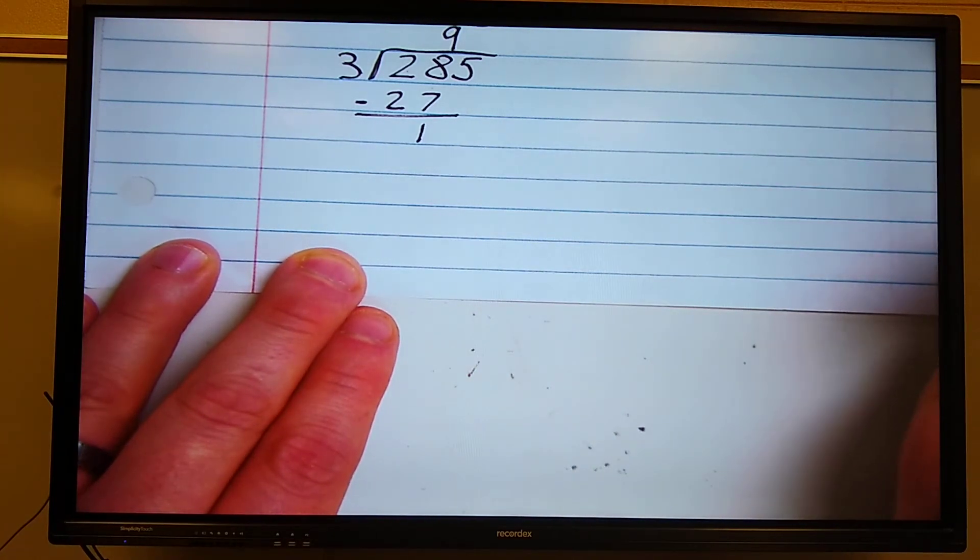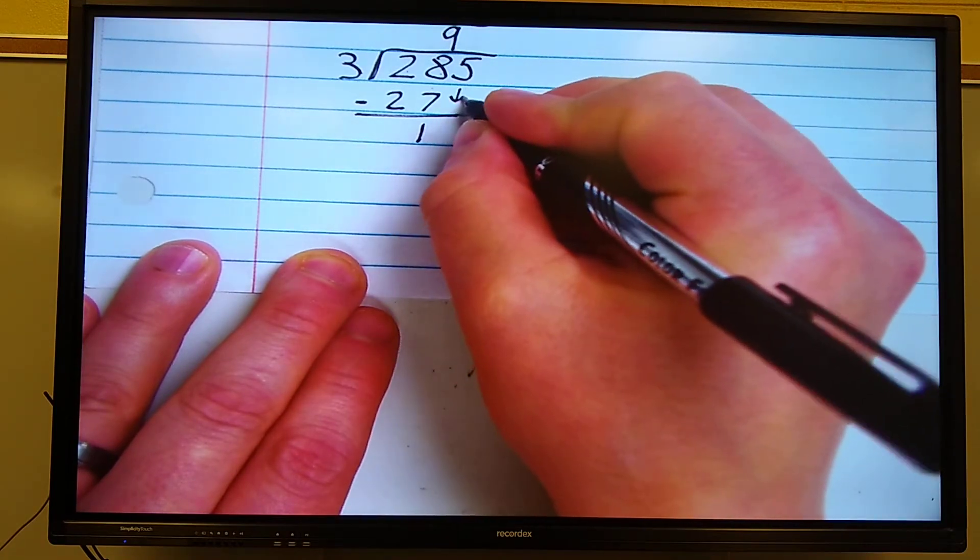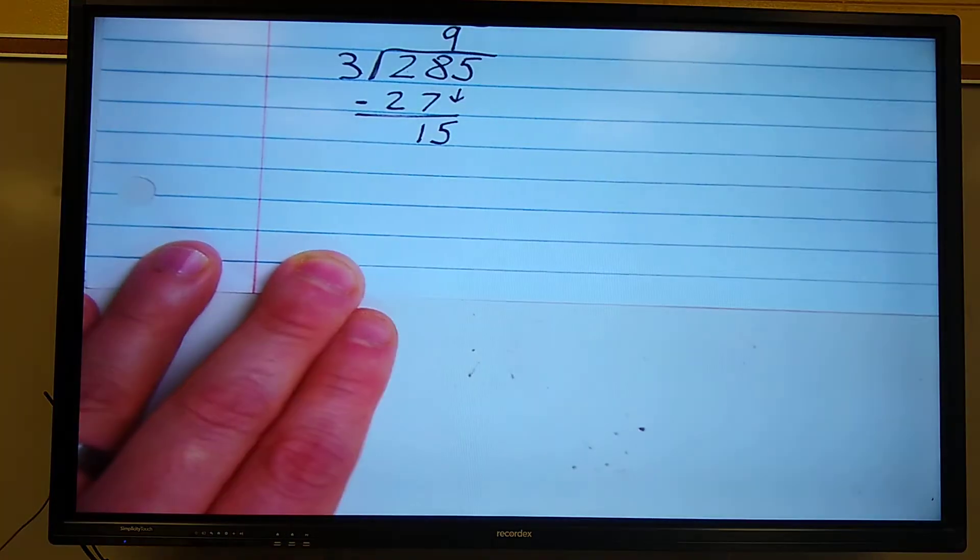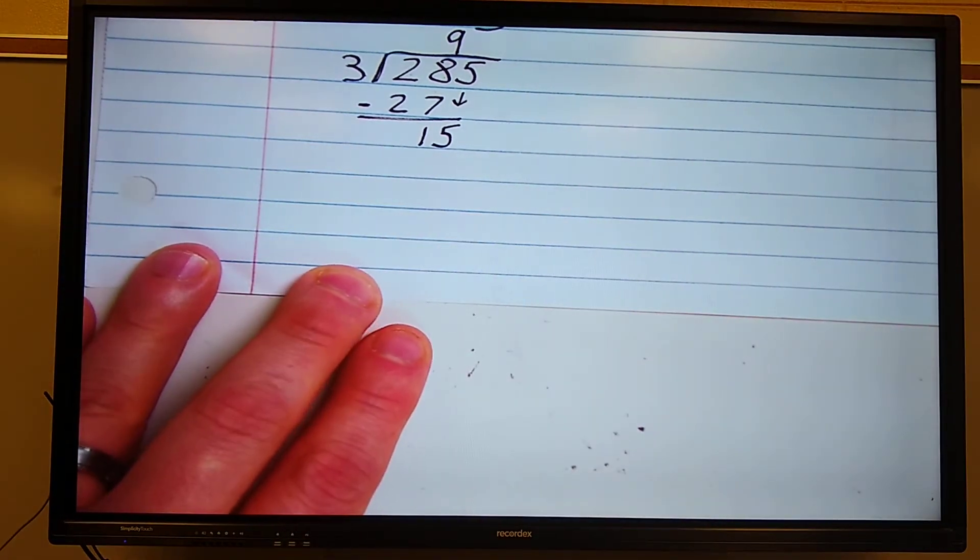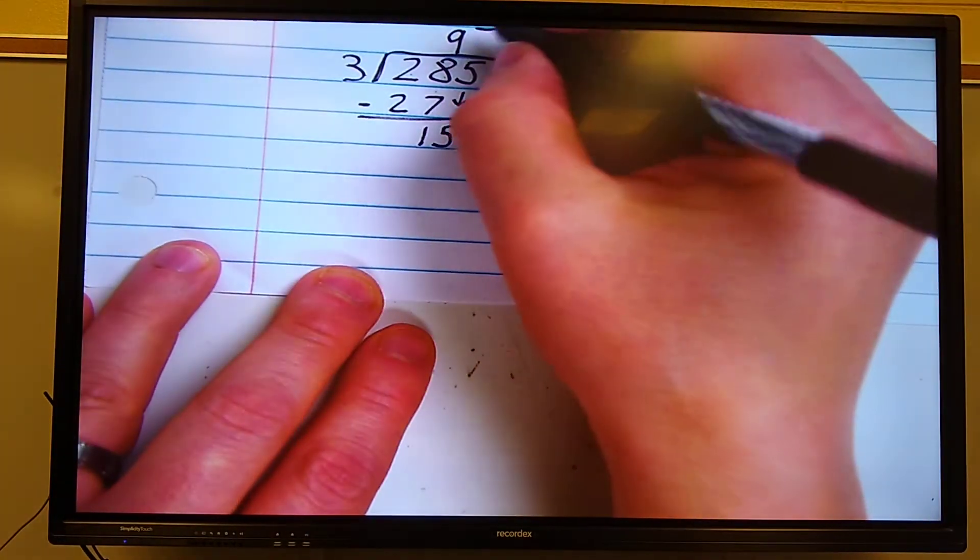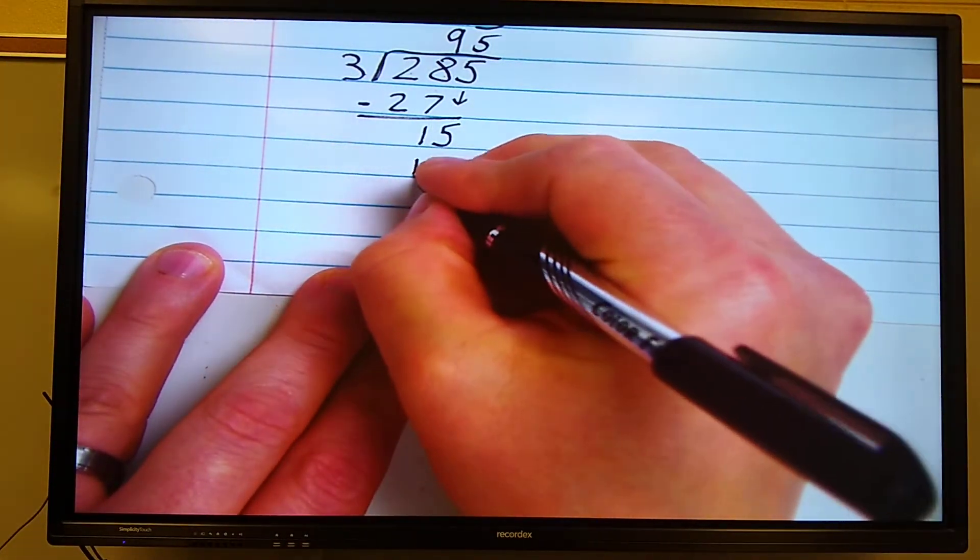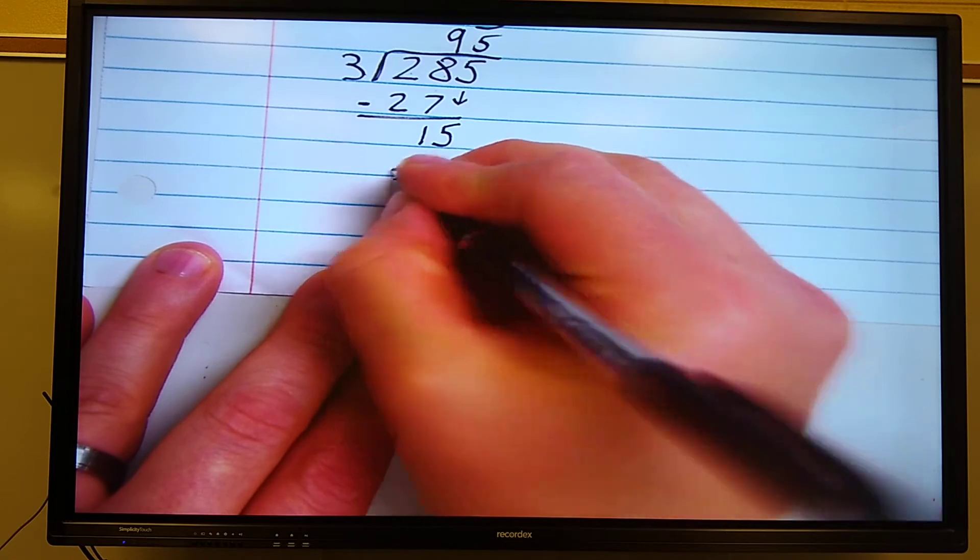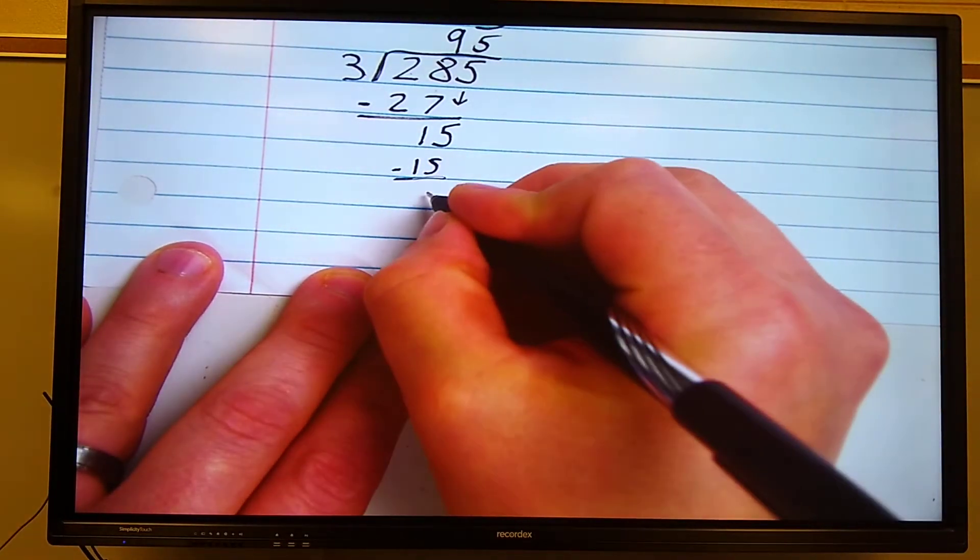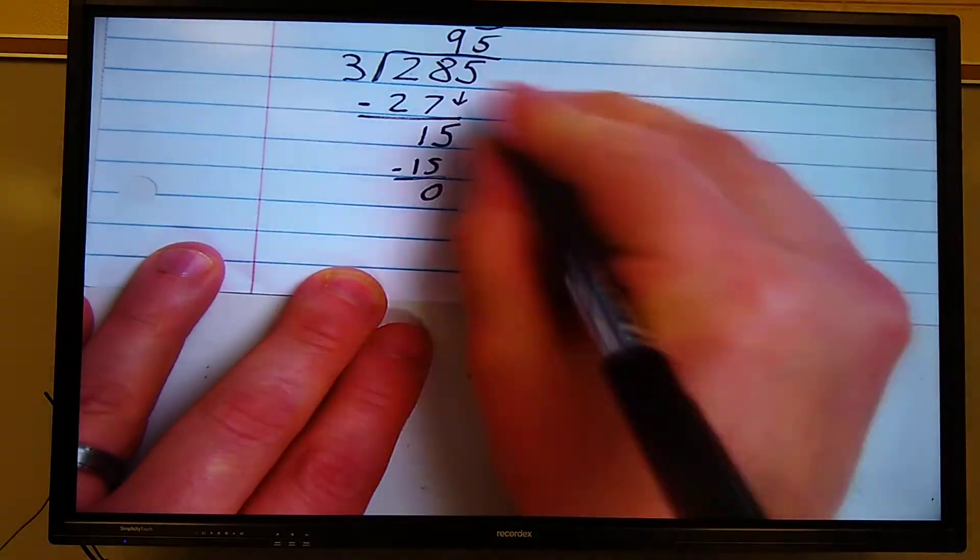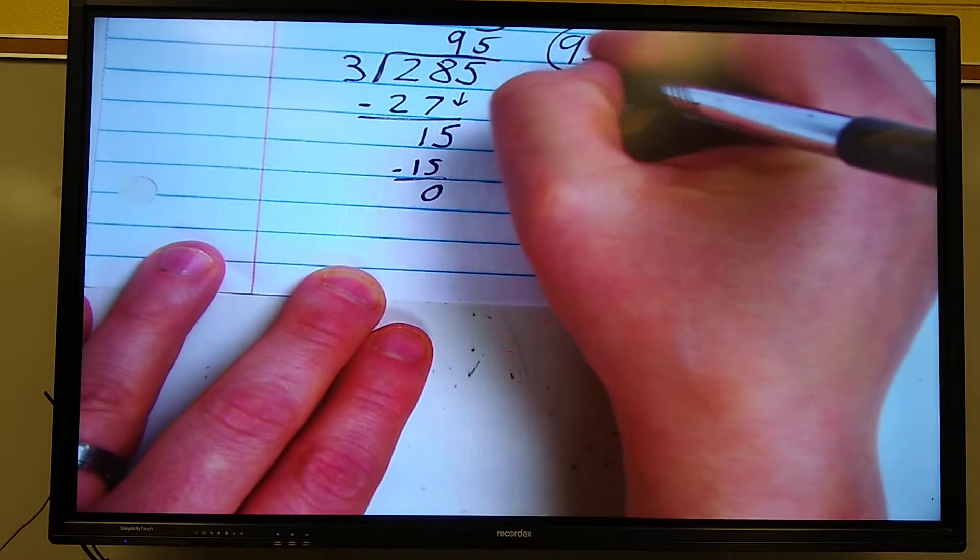Now my last step is to bring down an unused number. The 5 has not been used, so I'll bring it down. Starting over. Divide. 3 going to 15, how many times? You should have 5 times down. 5 times 3 is 15. Now I'll start with multiply. Now I'll subtract. 15 minus 15 is 0. No more numbers to bring down. I got 0. My answer is 95.